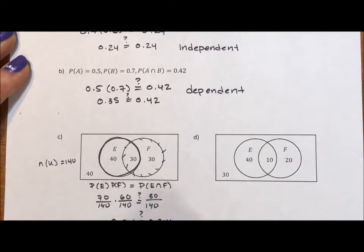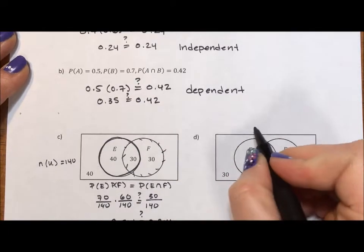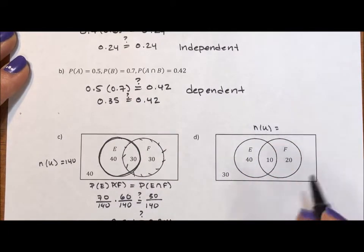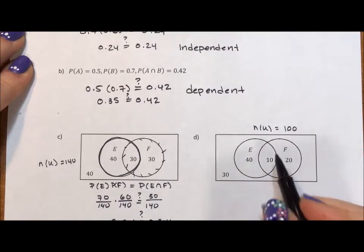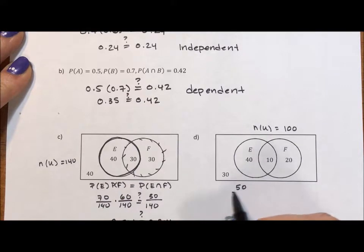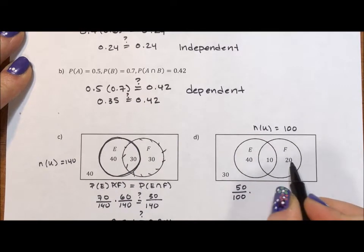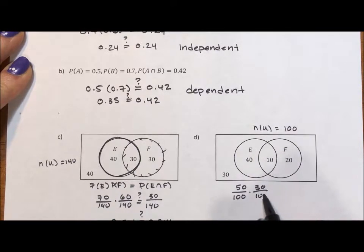For my next set, I have to get the universe again. So for this one, the number in the universe is 30, 70, 80, 90, 100. Probability of E is 50 over 100. Probability of F is 30 over 100. And the intersection is 10 over 100.